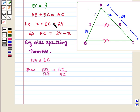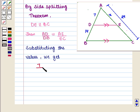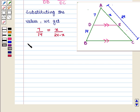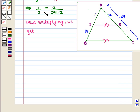Now substituting the values of AD, DB, AE, and EC, we get 7/14 equals x/(24 minus x). This implies that 1/2 equals x/(24 minus x). On cross multiplying, we get 24 minus x equals 2x.